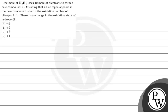Let's have a look at this question which says: one mole of N2H4 loses 10 moles of electrons to form a new compound Y. Assuming that all nitrogens appear in the new compound, what is the oxidation number of nitrogen in Y? There is no change in the oxidation state of hydrogen. Options are minus 3, plus 5, plus 3, or plus 1.